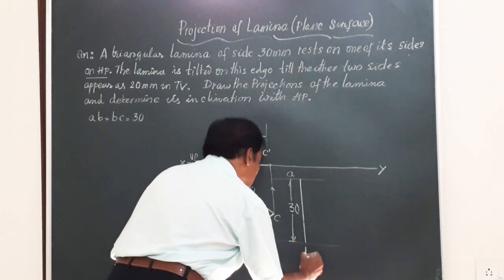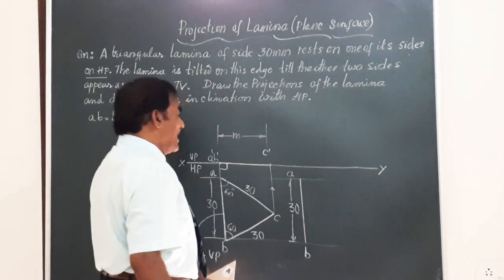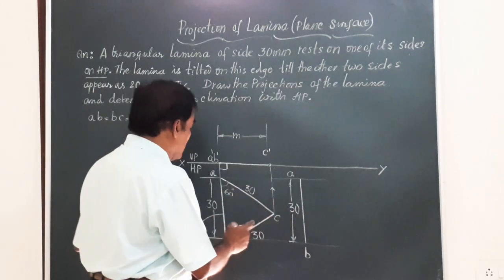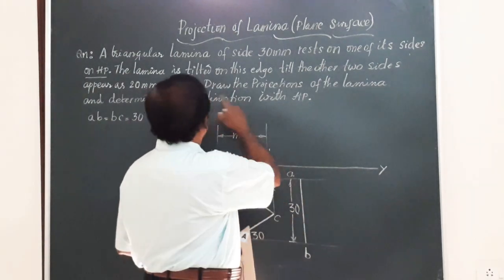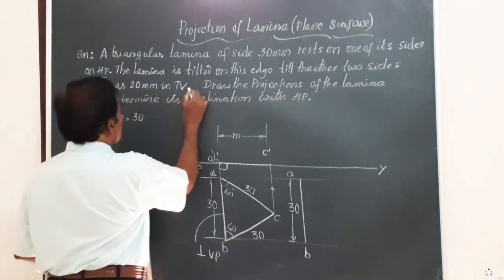And the other two sides, he says, that is BC and AC, they get reduced to 20 mm in the top view. So, I will take B as center, 20 mm radius, I will draw an arc.